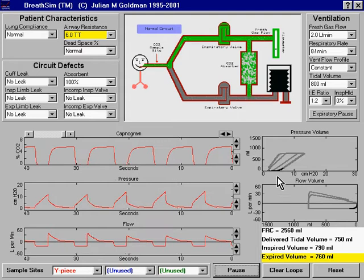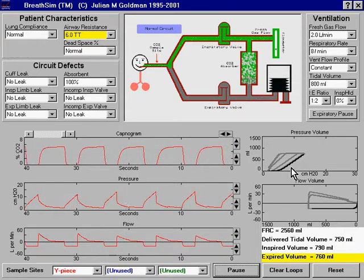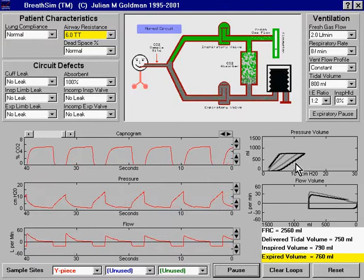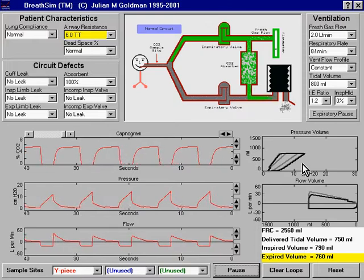The most interesting tracing is the pressure volume loop. Here, we can see that the inspiratory portion of the loop has the same slope, but the loop is wider and the inspiratory portion is shifted to the right.